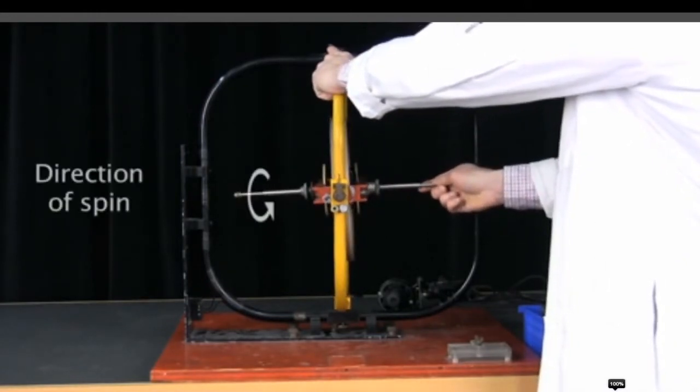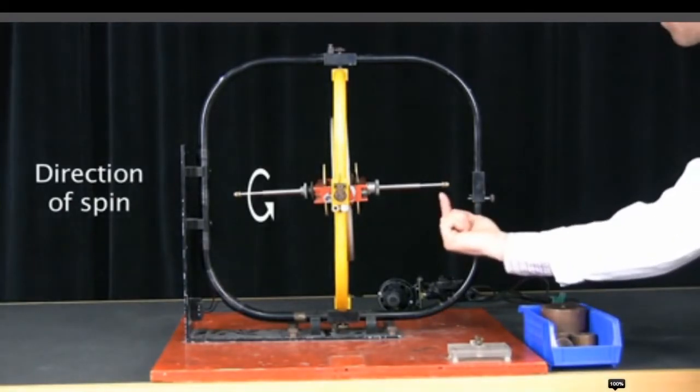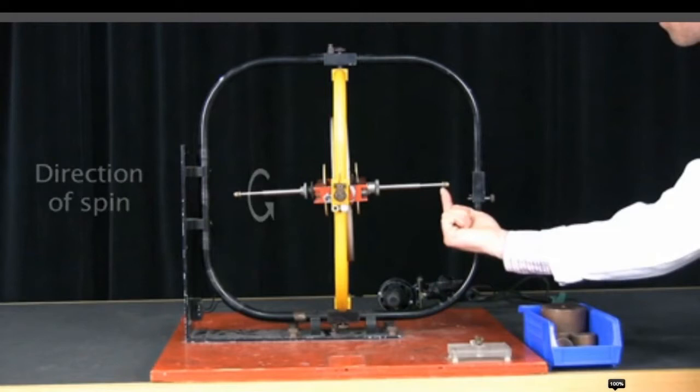Now this is the direction of spin, means the direction of rotation in which the rotor is rotating. The person is applying force on one end of the spin axis. Now answer me in which direction it should go. Upwards, right? But let's see what happens.